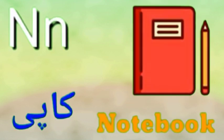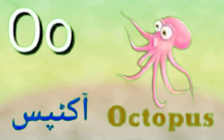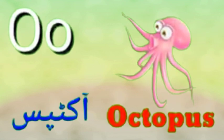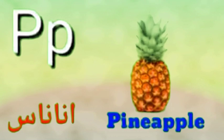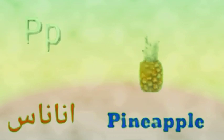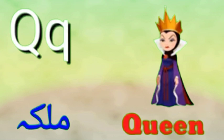N is for Notebook, Notebook means Kapi. O is for Octopus, Octopus means Octopus. P is for Pineapple, Pineapple means Ananas.